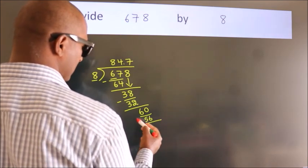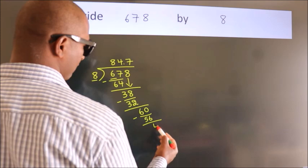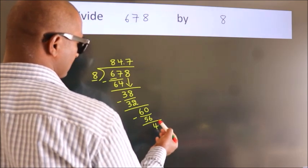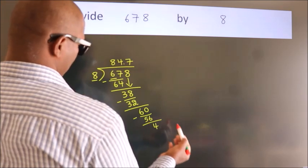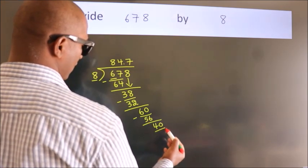Now we subtract and get 4. After this, we already have the decimal, so we directly take 0 to get 40.